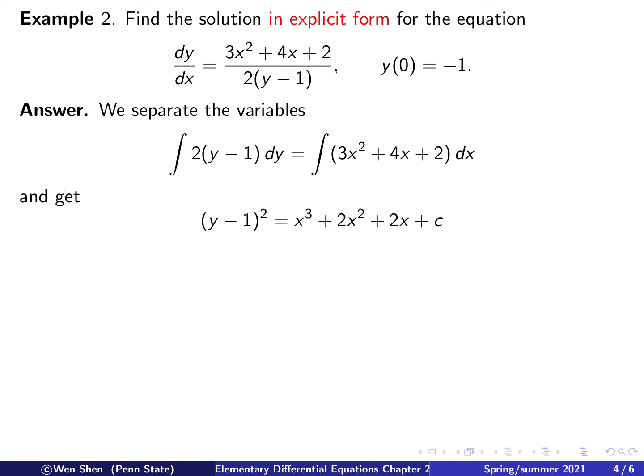So working out the integration, we have the following. So this is (y minus 1) squared, and equal, integrating here, I get x cubed for the first term, 2x squared for the second term, and 2x for the last term. And then there is an arbitrary constant c here.